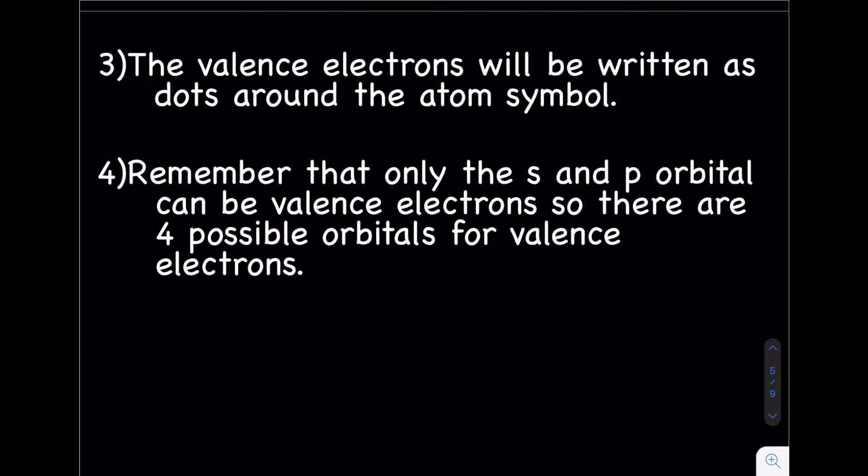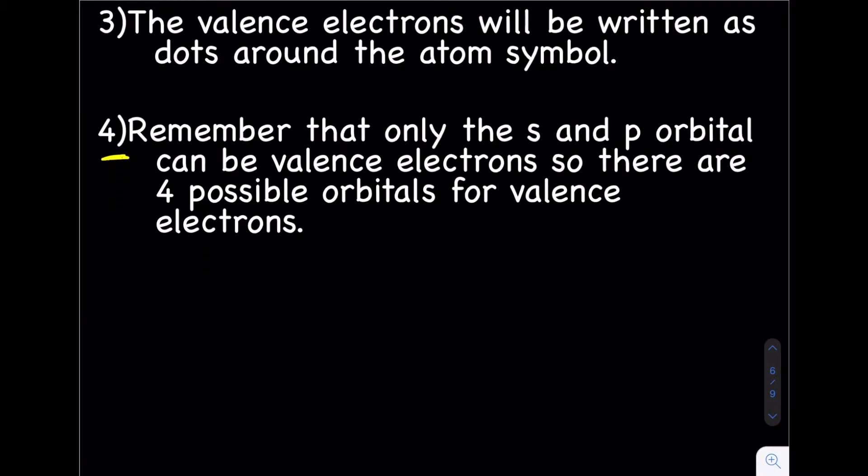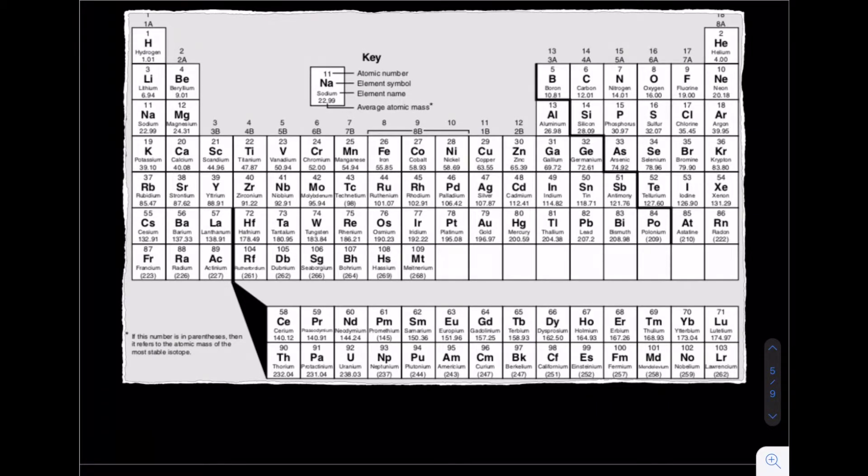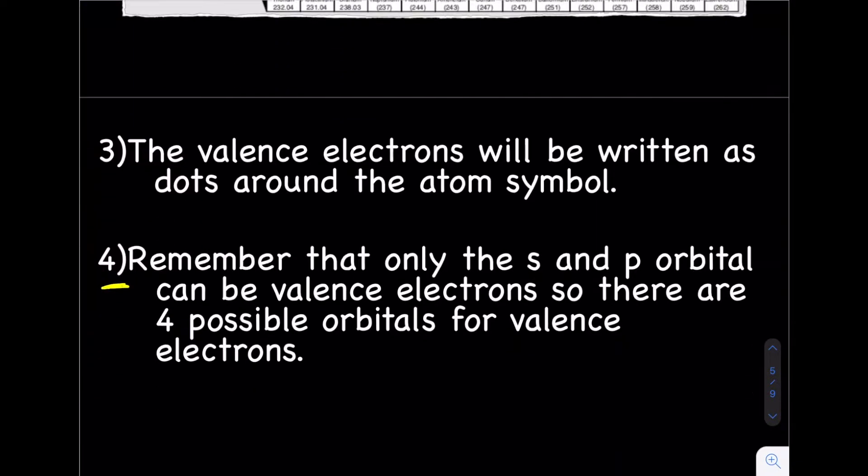The valence electrons are going to be written as dots around the atom symbol. I want to focus on point four first. Remember that only S and P orbitals can be valence electrons, so there are four possible orbitals for valence electrons. That could be a little confusing. Let's draw an orbital diagram. I should pick something first. Let's pick selenium, which has 34 electrons.